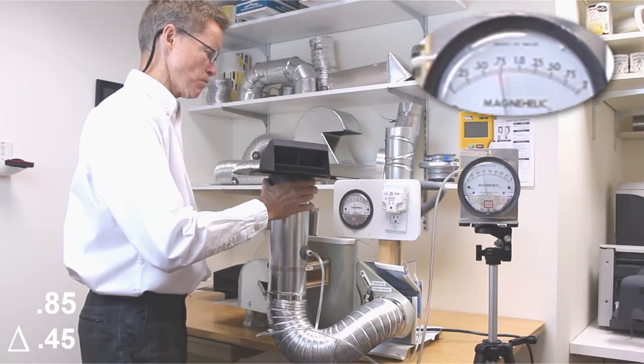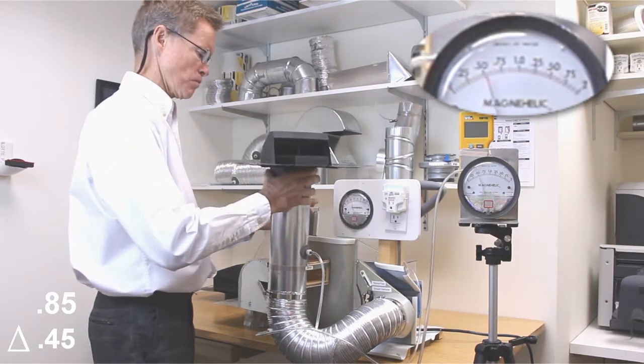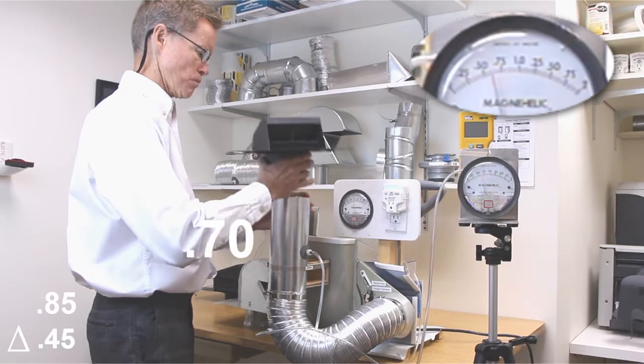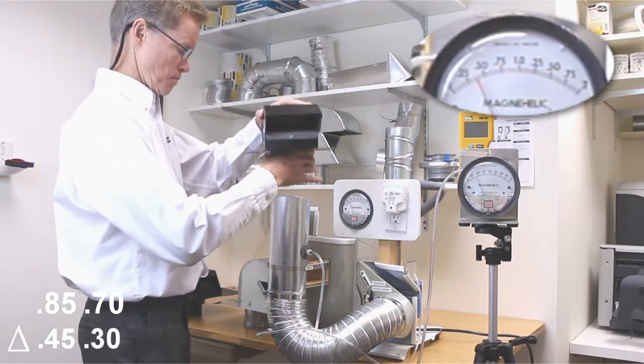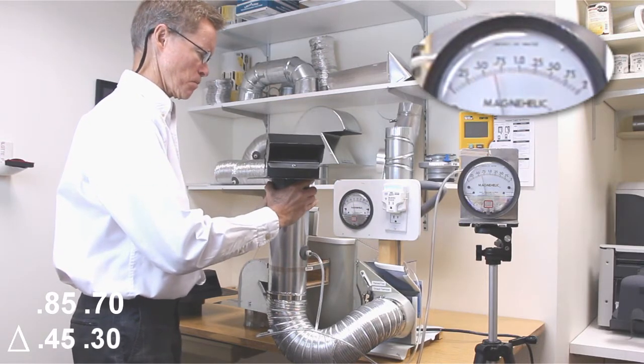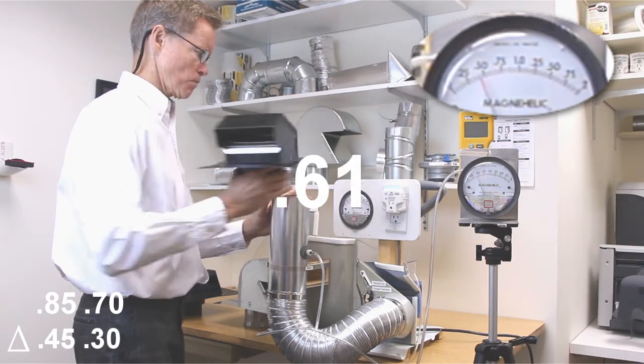A common plastic roof vent, again starting with 0.40 water column inch, rising to 0.70. A popular low profile vent, 0.40 water column inch to 0.61.